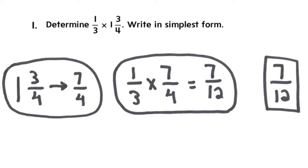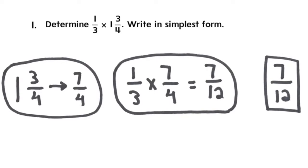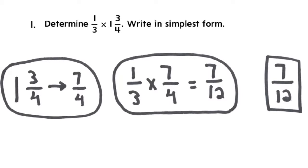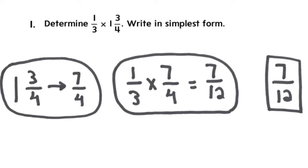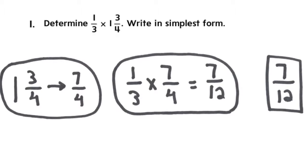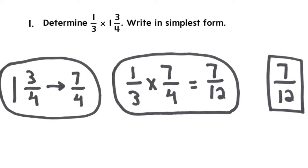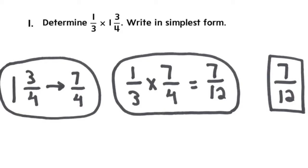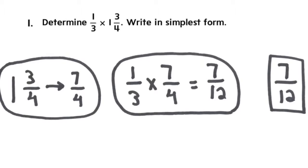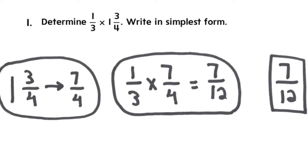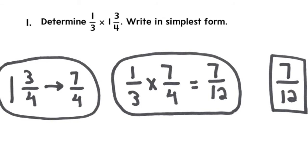Now if you rewrite your problem, it now looks like 1 third times 7 fourths. And if you recall the steps to multiplying fractions, you would just do numerator times numerator and denominator times denominator, which gives you 7 twelfths. Now you have to ask yourself, can I simplify? Or is it improper? Since it is neither, your answer stays as is.